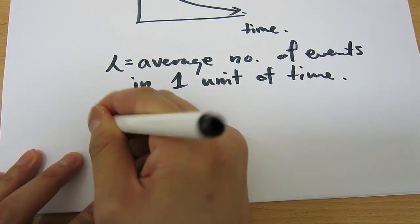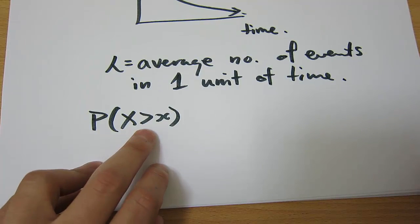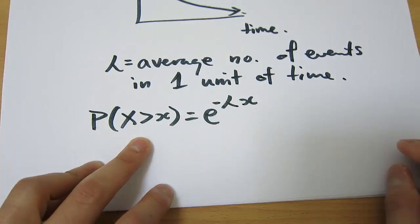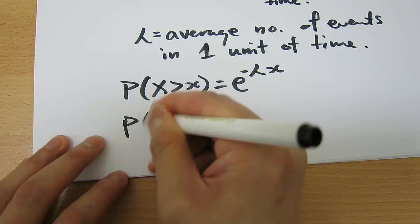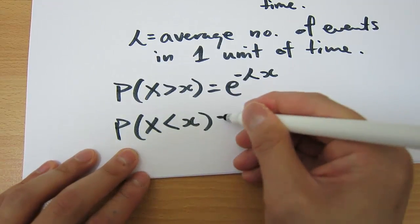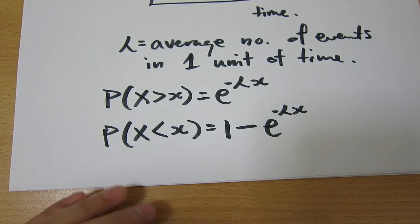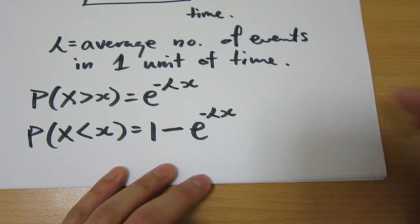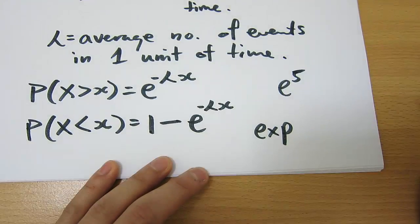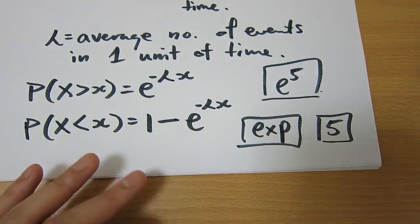The equations for calculating probabilities are: the probability that x — the time between two events — is greater than a particular time, equals e to the power of negative lambda x. The probability that the time between two events is less than a particular time x equals 1 minus e to the power of negative lambda x. The button you need on your calculator is the EXP button. For example, to calculate e to the power of 5, press EXP, then 5, then equals.